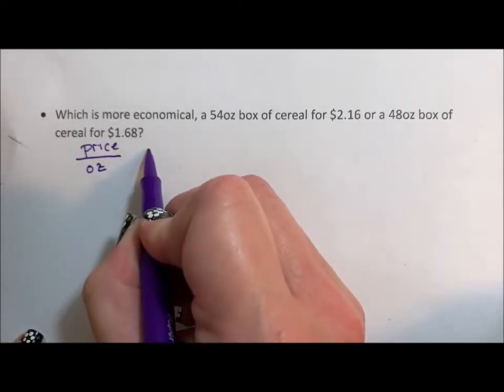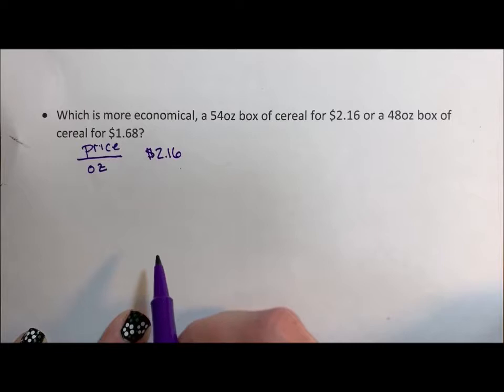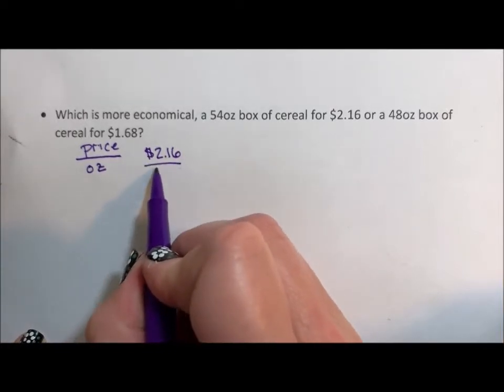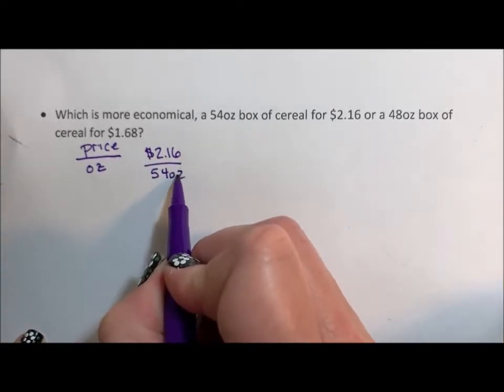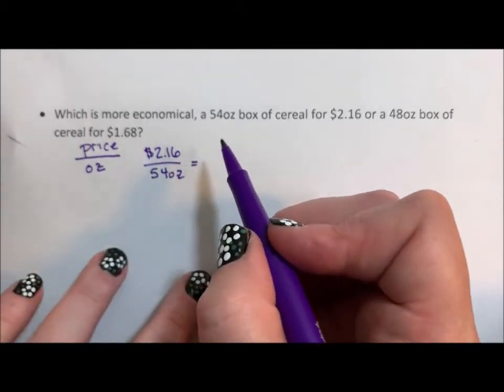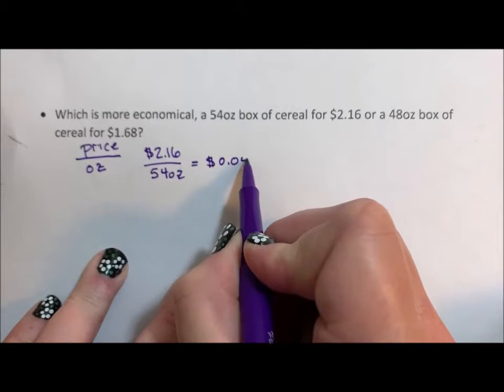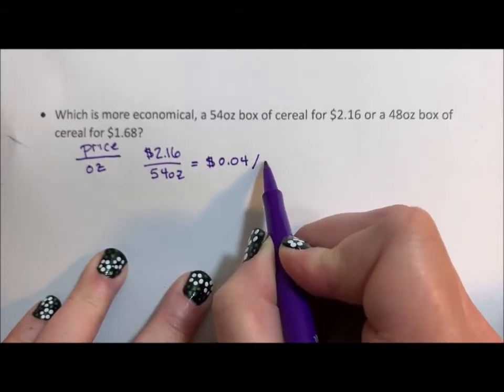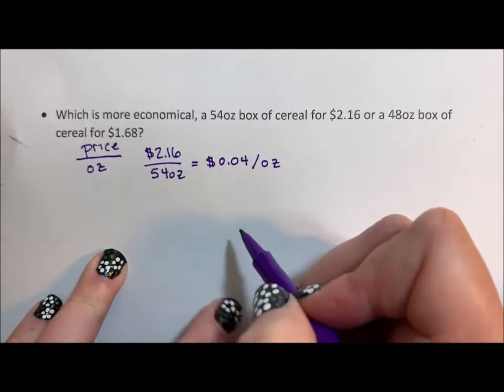So we're going to take the $2.16 priced box per 54 ounces and when we divide this out, we're going to find out that that is 4 cents per ounce. And we can write it either with a fraction bar.